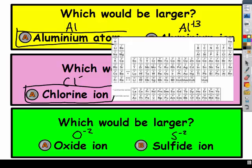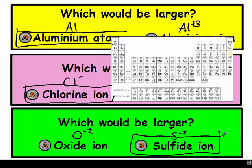And try this last one. So this one we have O negative two and S negative two. Those are not the same element. So to figure out which one's larger, you have to figure out what atom has the same number of electrons as that ion. O negative two gained two electrons, so it should have the same number of electrons as neon. Sulfur had sixteen electrons and gained two, so it should be the same as argon's number of electrons. Now we compare neon and argon. Argon is bigger because it has more energy levels. So sulfide ion is larger than oxide ion.